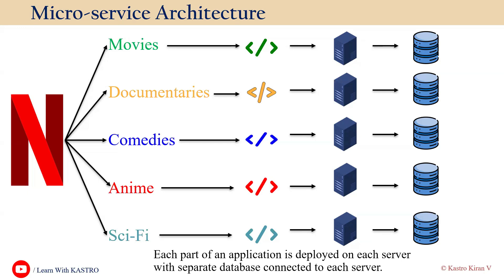Microservice-based architecture is preferred in real-time scenarios because it uses completely independent-based services. Application functionality is divided into smaller components and self-contained services. For example, movies-related code is deployed in a separate server with its own database — that's a self-contained service, and the application is divided into smaller fragments.